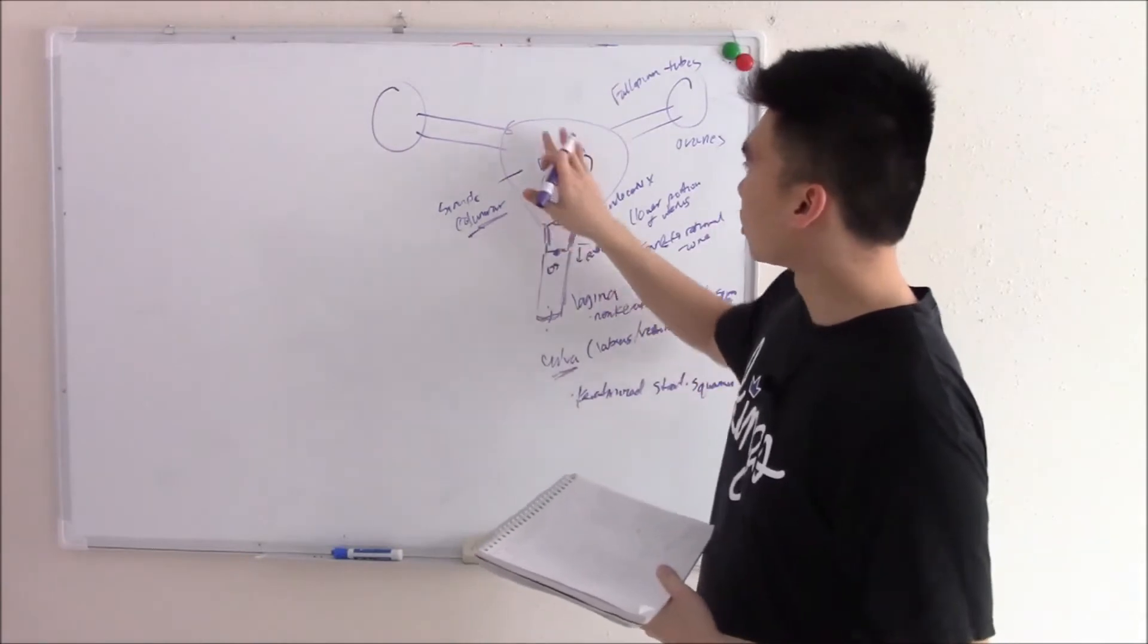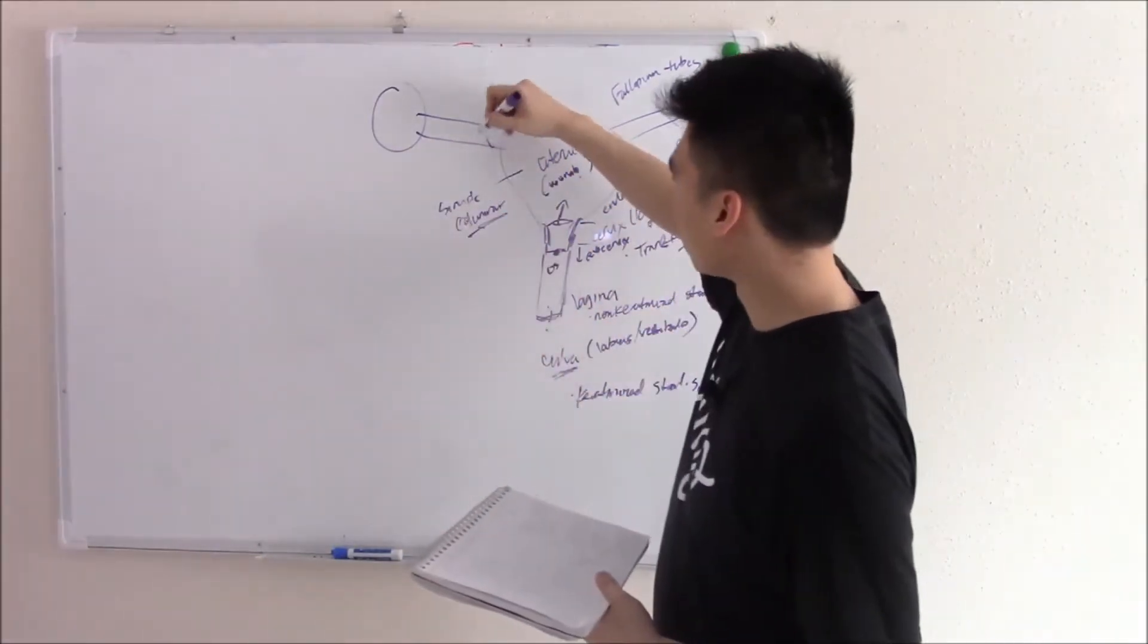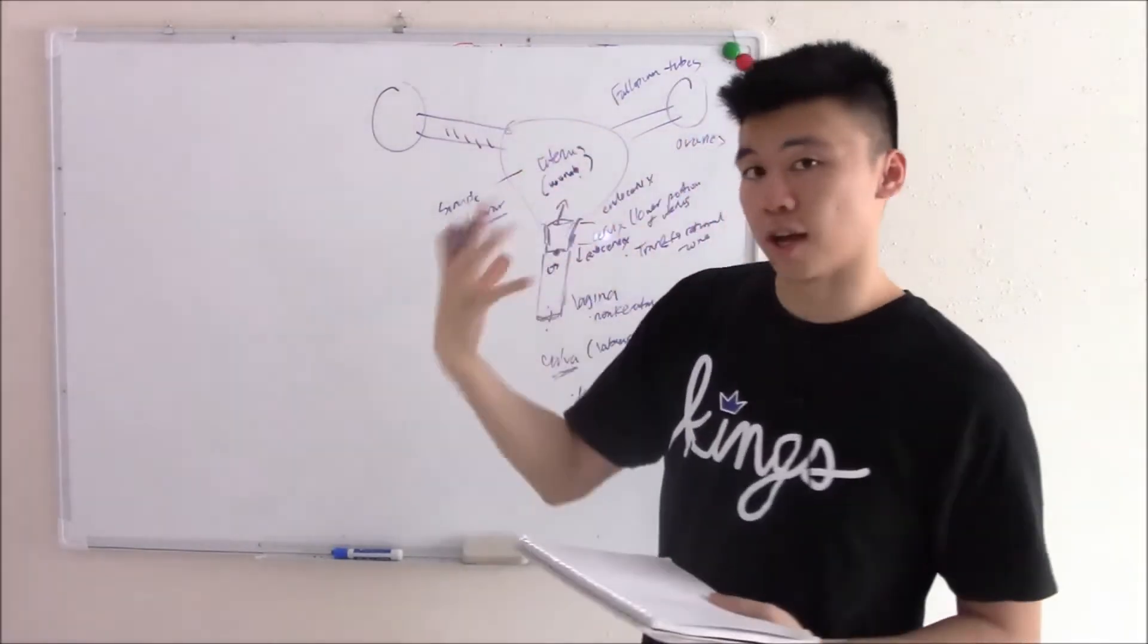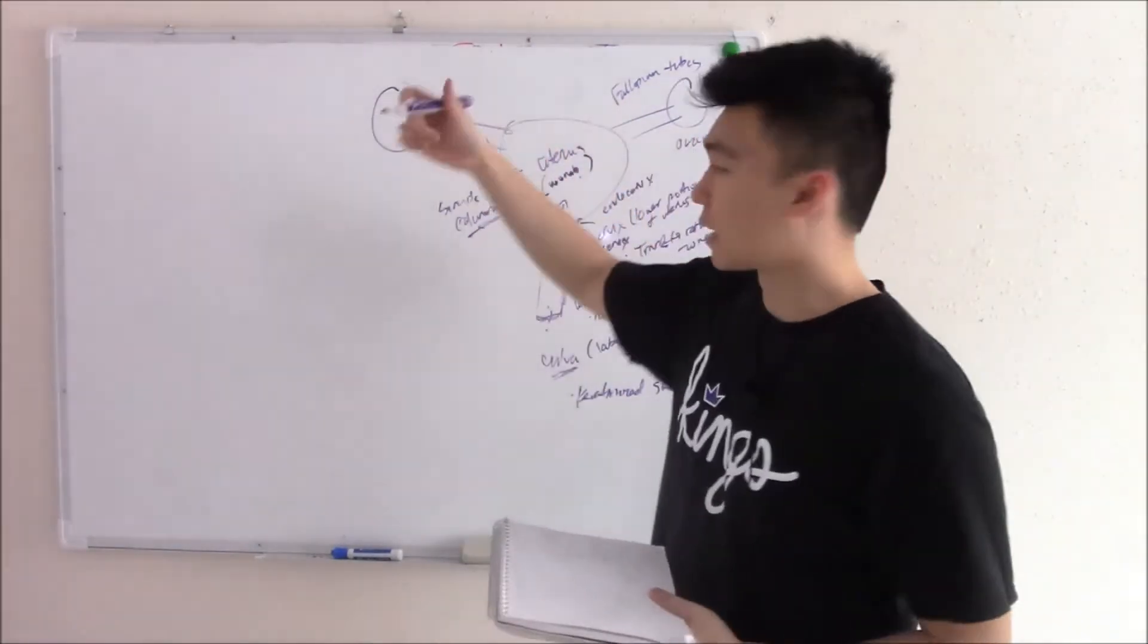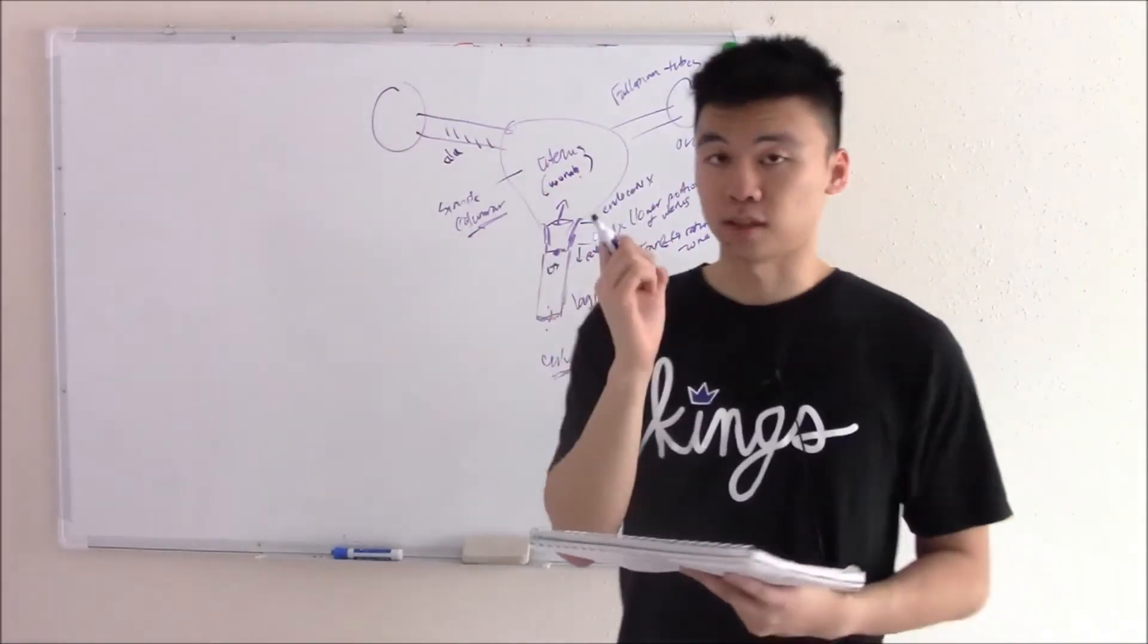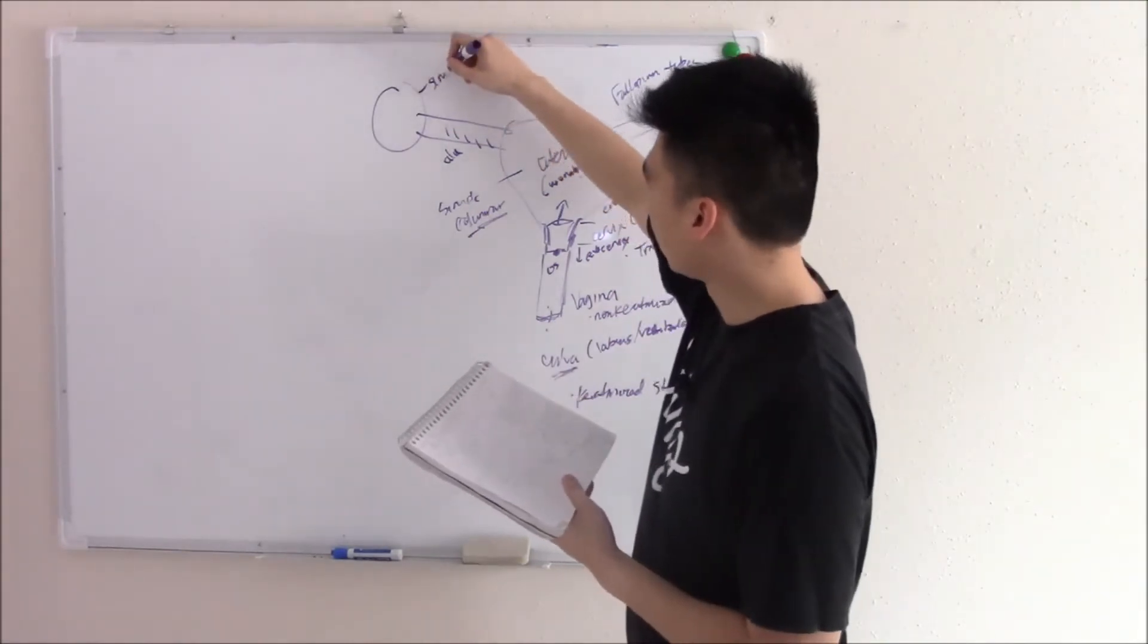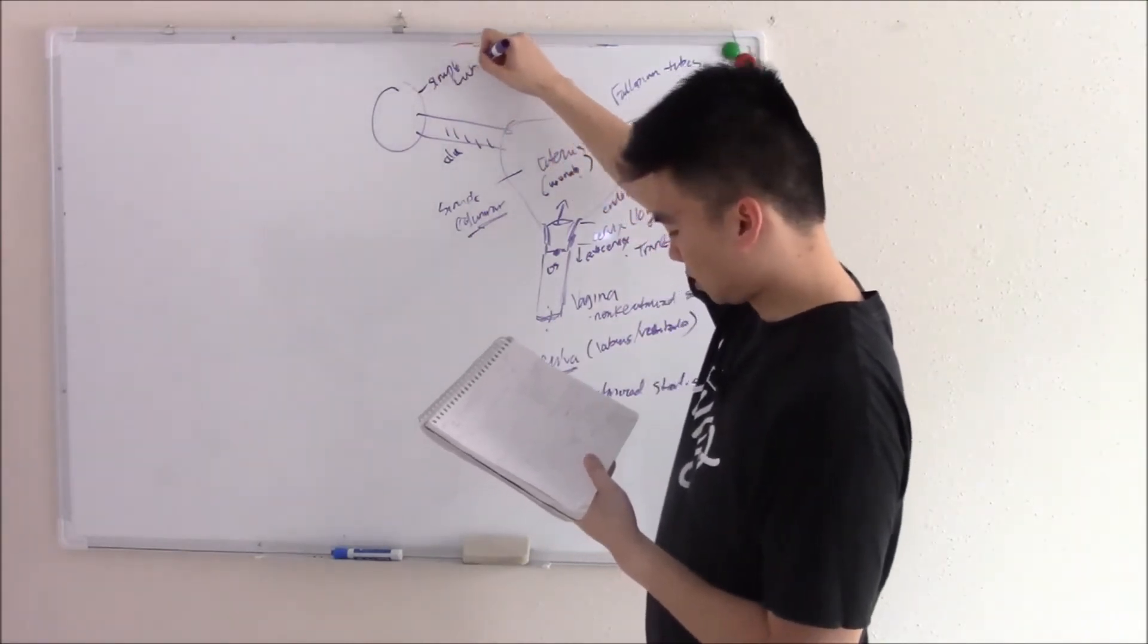Moving on up from the uterus to the fallopian tubes, also simple columnar, but your fallopian tubes help move your egg. The thing that helps move the egg is cilia. So your fallopian tube is simple columnar plus cilia. Lastly, your ovaries. Your ovaries are unique. They're simple cuboidal.